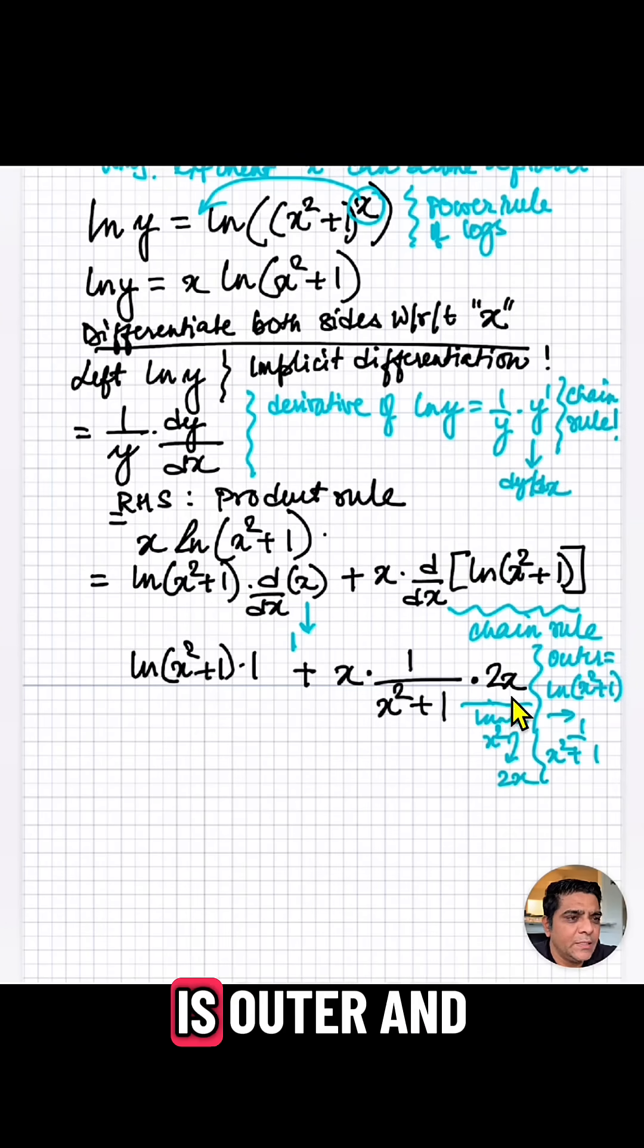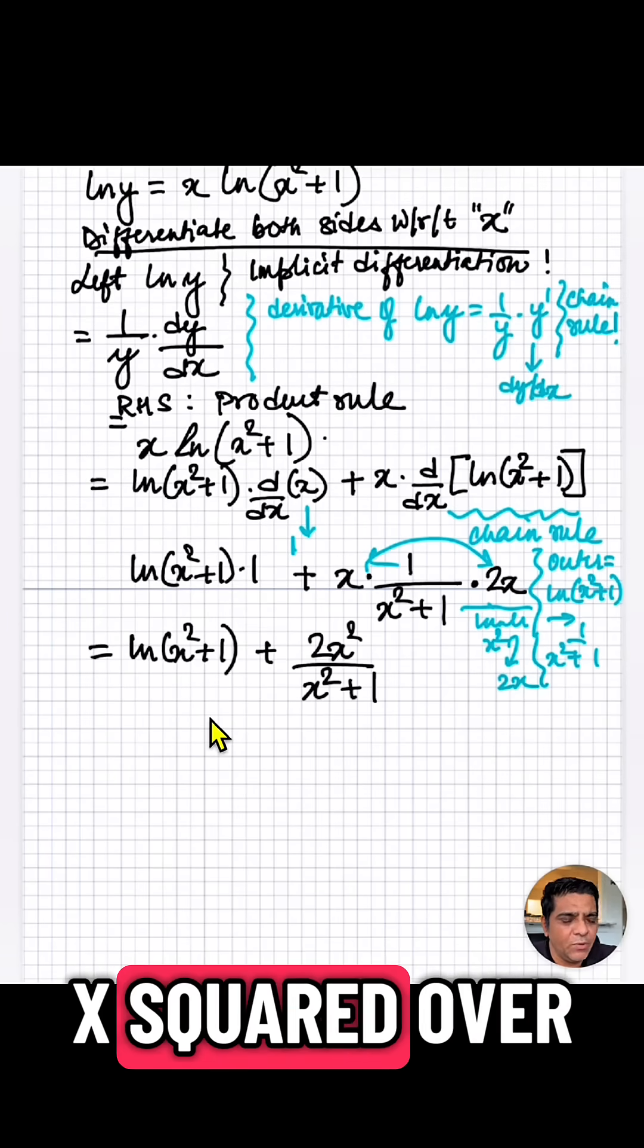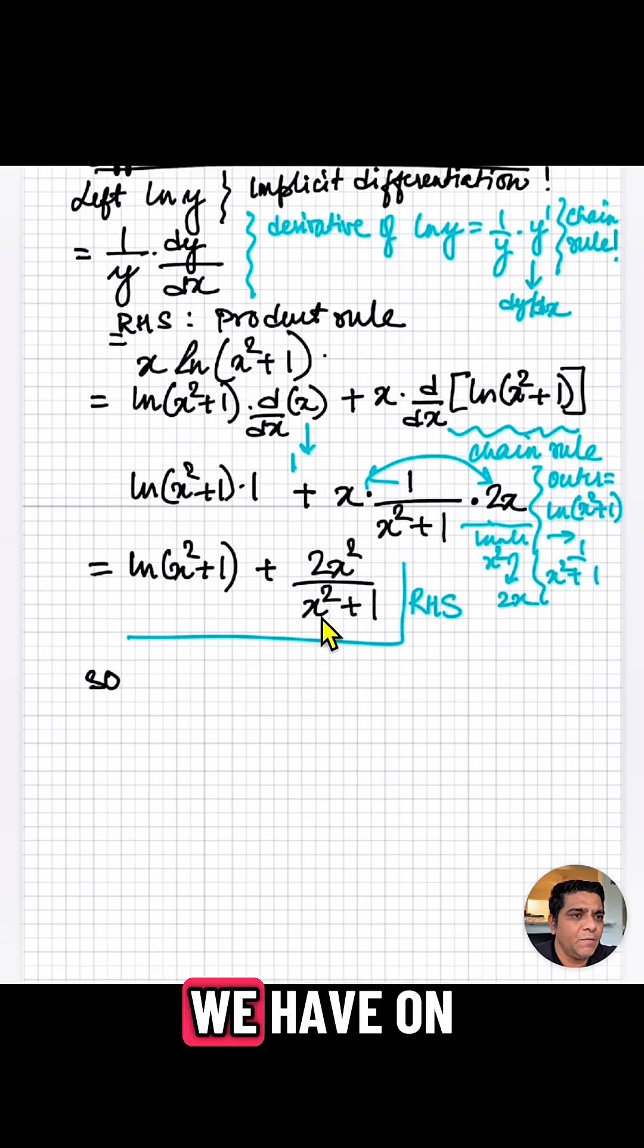So this is outer and then inner. So now we are left with ln x squared plus 1 plus 2x squared over x squared plus 1. We just multiply these. And this is basically what we have on the right hand side.